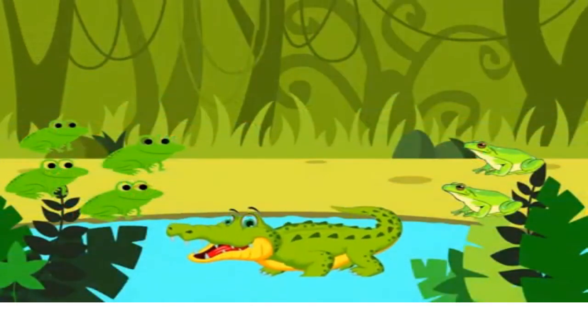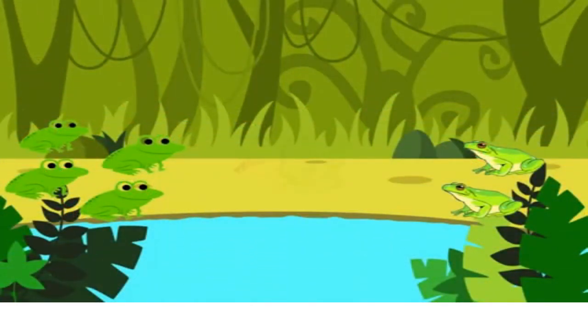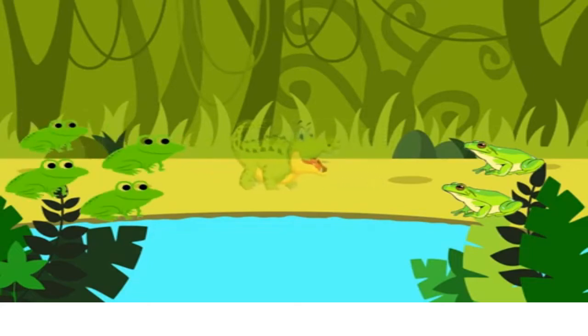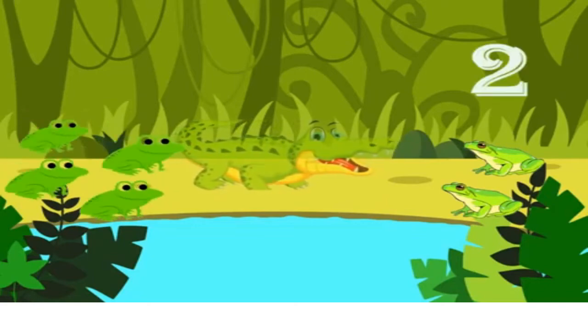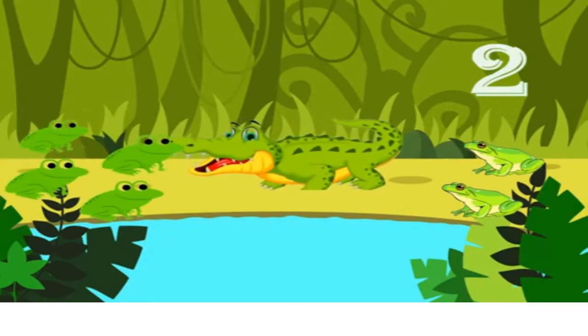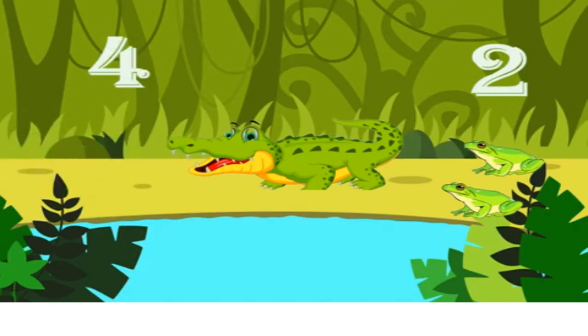Hmm! Tasty frogs! Let me count again and see which side has the greater number. One, two. Only two this side. One, two, three, four. Four this side. I will eat four frogs. You know why? Because that's the greater number.